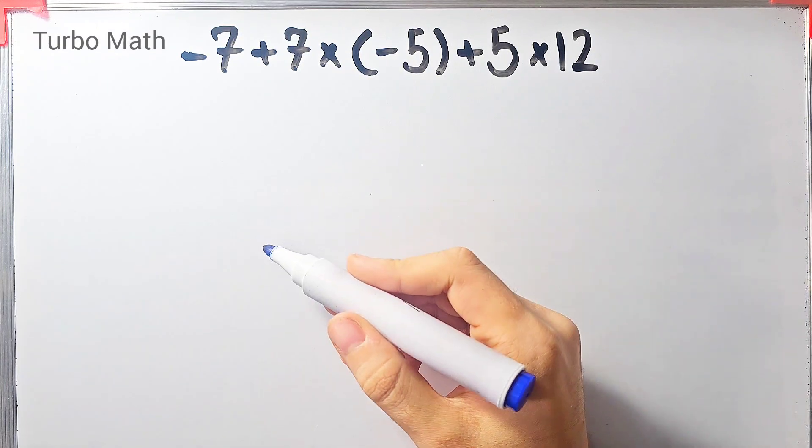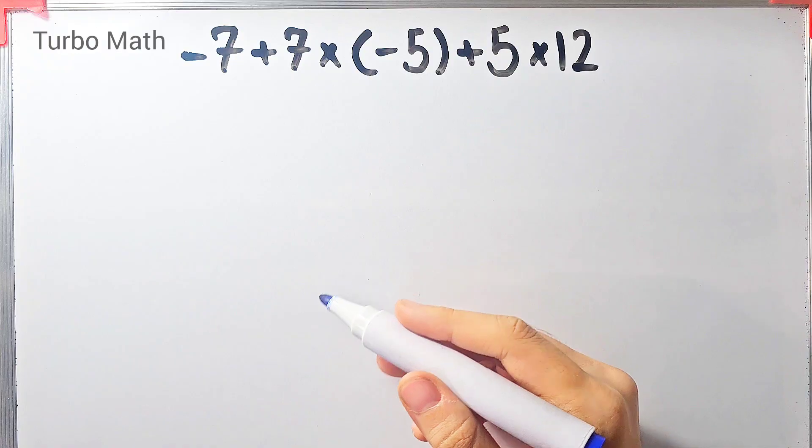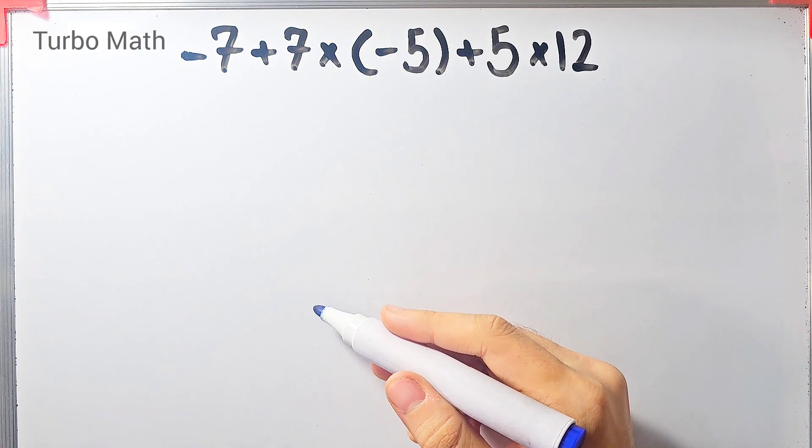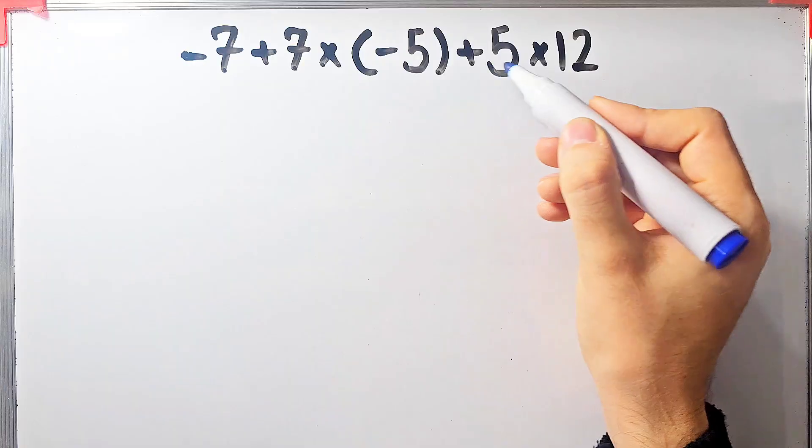Hi friends, welcome to Turbo Math channel. Many people when they see this question don't know which operation to do first, so they often make a mistake. Negative seven plus seven times negative five plus five then times twelve.